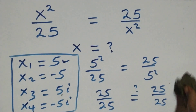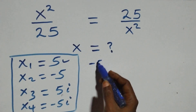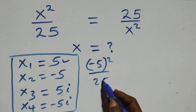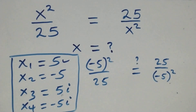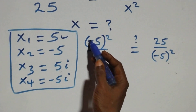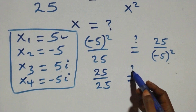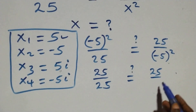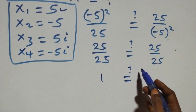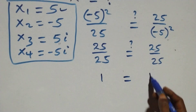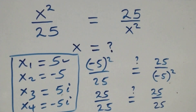Then we substitute x equals to minus 5. The equation becomes minus 5 all squared over 25, which equals 25 over minus 5 all squared. That gives 25 over 25, which is 1, equals 25 over 25, which is 1. Left hand side equals the right hand side. So minus 5 also satisfies this given problem.